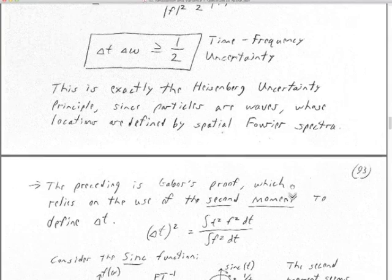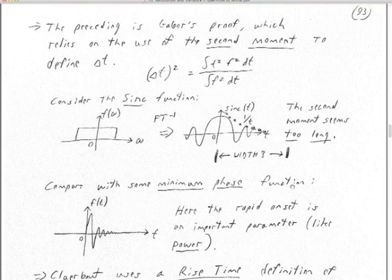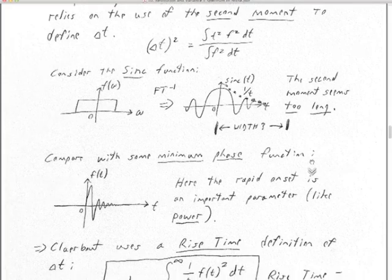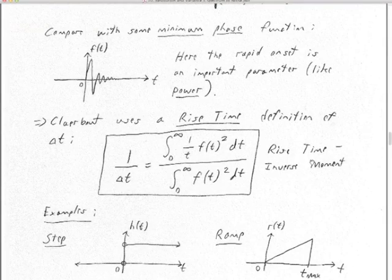Here are some comments about the use of this second moment function. If you consider the sync function — the inverse Fourier transform of a boxcar in frequency, a limited band — the second moment gives you too wide a width, because the sync function kind of goes on forever. If you look at a minimum phase function like an explosion seismogram or an air gun in a marine survey, you get a very rapid onset, and the data really come from that rapid onset and first peak.